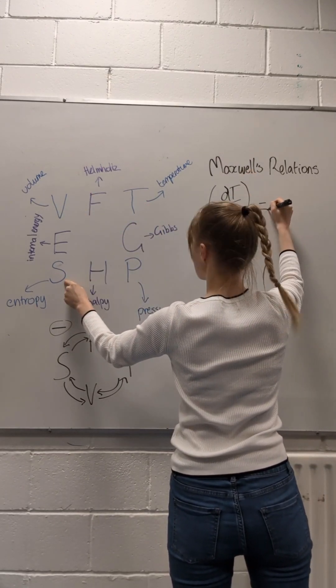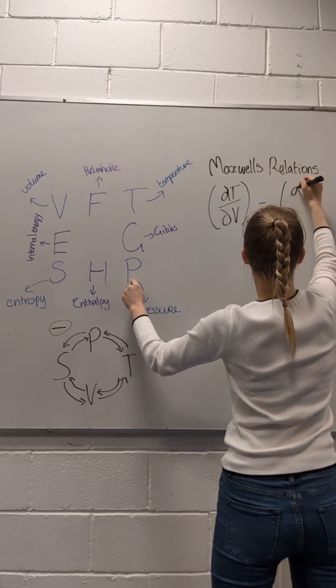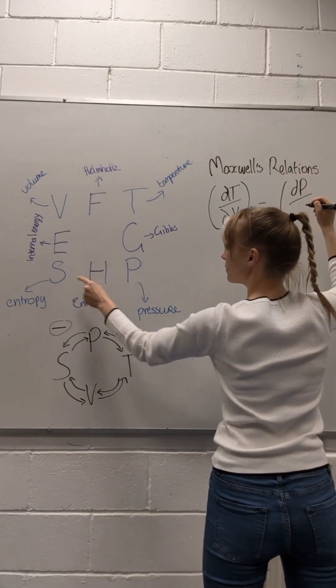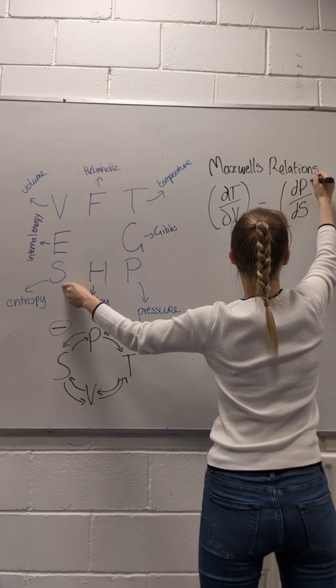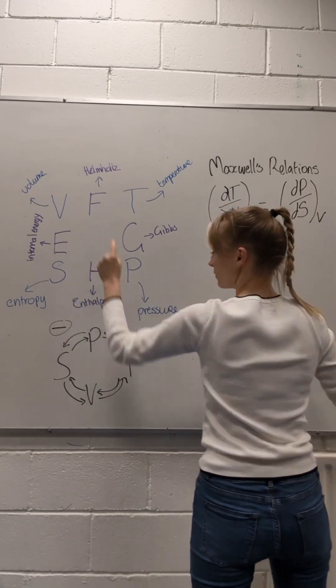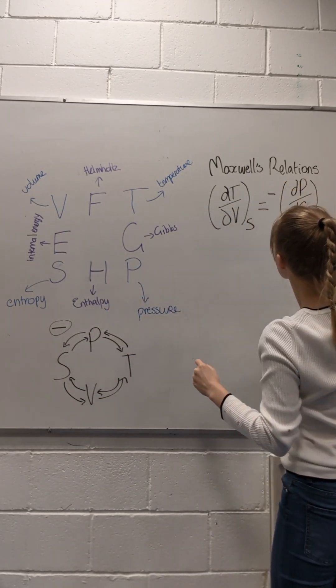To equate this Maxwell relation, we mention the last variable we didn't mention, but now we have to go anticlockwise, so it's dP/dS at constant V. But remember the change from S to P is negative, so we need to put a negative sign.